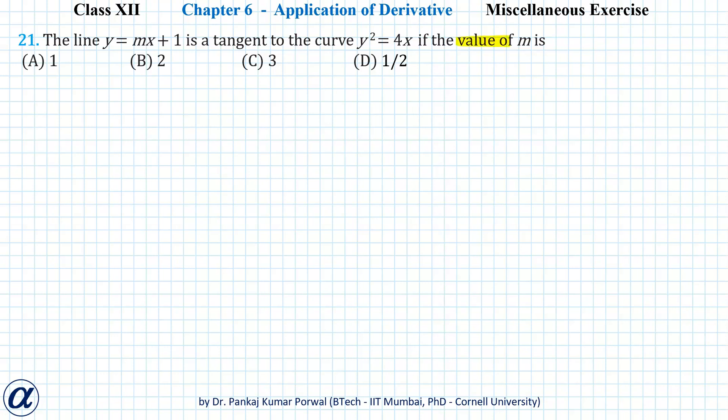In this question, we want to find the value of m for which the line y = mx + 1 is tangent to the curve y² = 4x. Note that the curve is a parabola and this equation is that of a straight line.